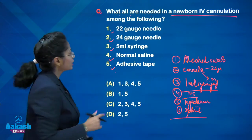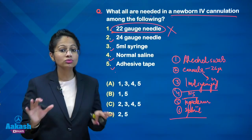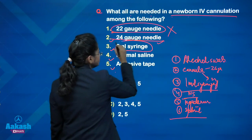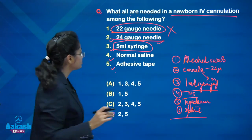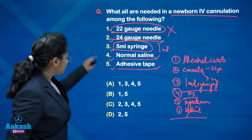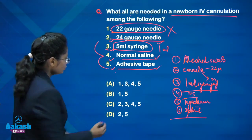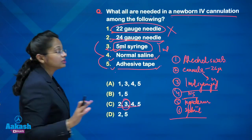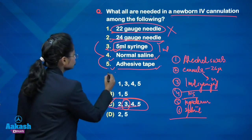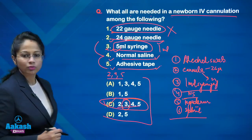Looking at the options: 22-gauge cannula — no, that is too large for a newborn. 24-gauge — yes, you can use 24 or 26. 5 ml syringe — ideally no; a 1 ml syringe is required. Normal saline — yes. Adhesive tape — yes. Since option 2, 4, and 5 correspond to 24-gauge needle, normal saline, and adhesive tape, the correct answer is option C. The best combination available from the options is 2, 3, 4, 5 — option C.